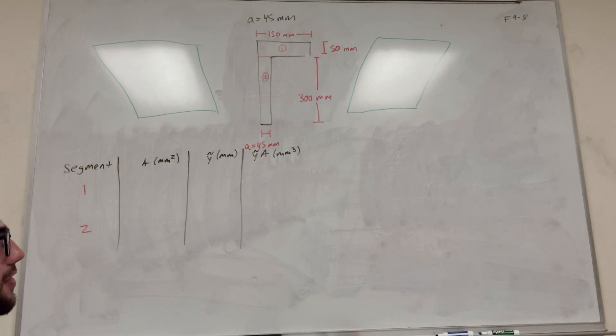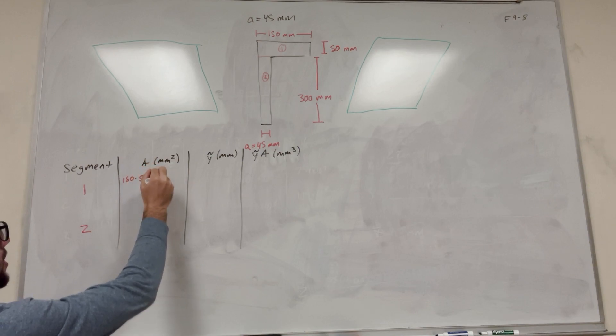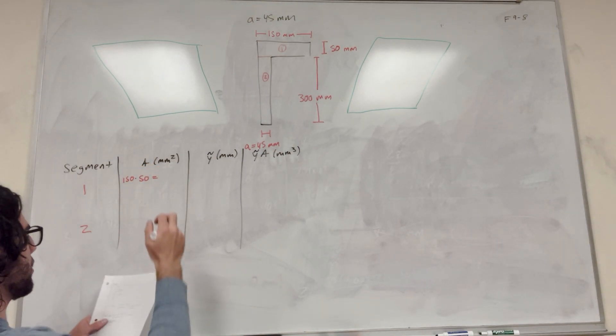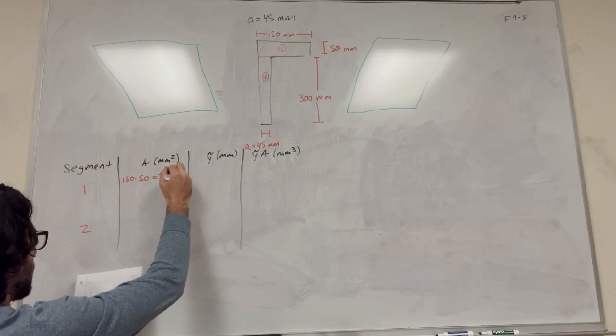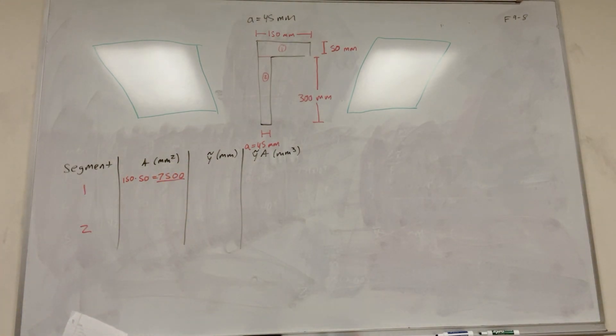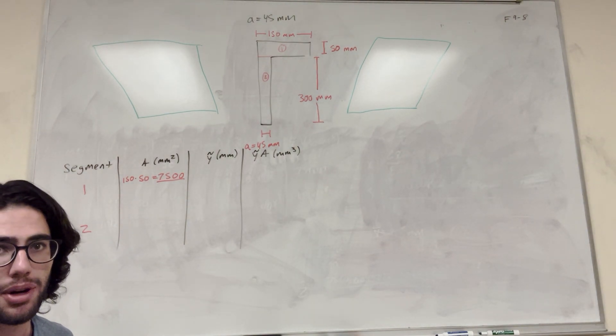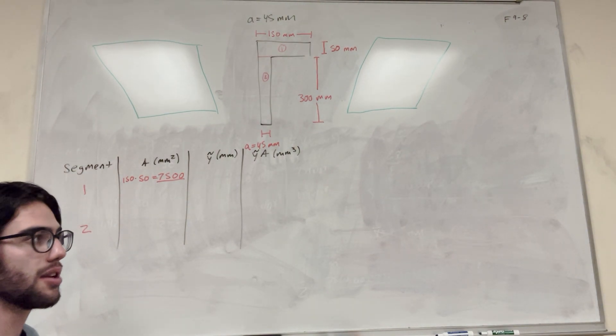So now we need to find the area of each segment. It looks like the area of the top rectangle is 150 times 50, right? So that's going to be 7,500 for the first area. Make sure we remember this is in millimeters squared. You want to make sure that we keep track of the units as we go along.